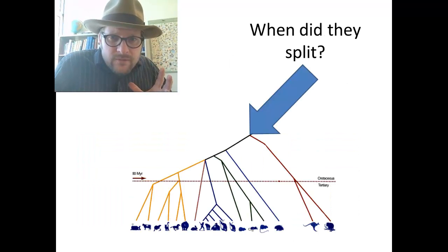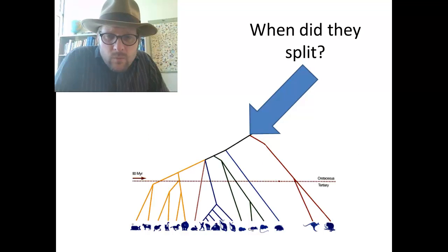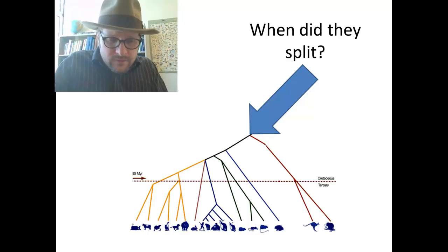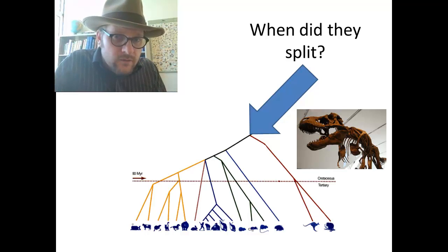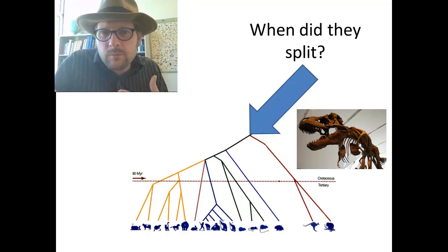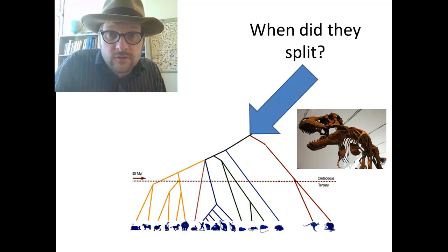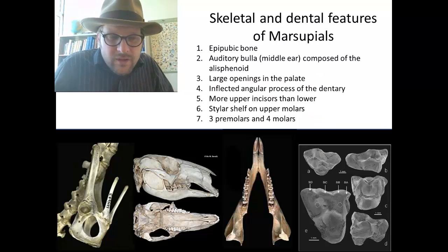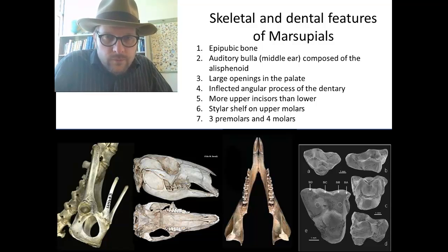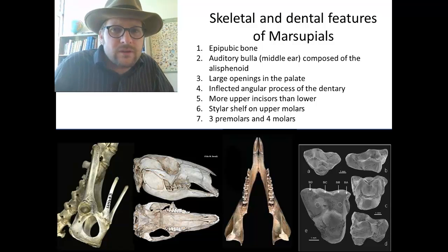This is why marsupials have pouches — little teeny wormy babies have a place to go and start nursing, get nutrients from the mother, and have a safe place since they can't really move around. One of the questions we have is when did this split between placental mammals and marsupial mammals happen? To answer this question, we have to go back into the fossil record, back to the age of the dinosaurs, specifically the Cretaceous period. We have to look for skeletal and dental features since we can't travel back and watch a birth.